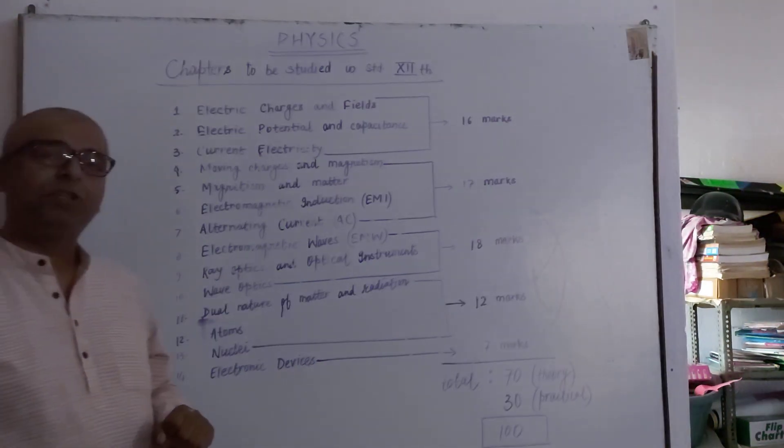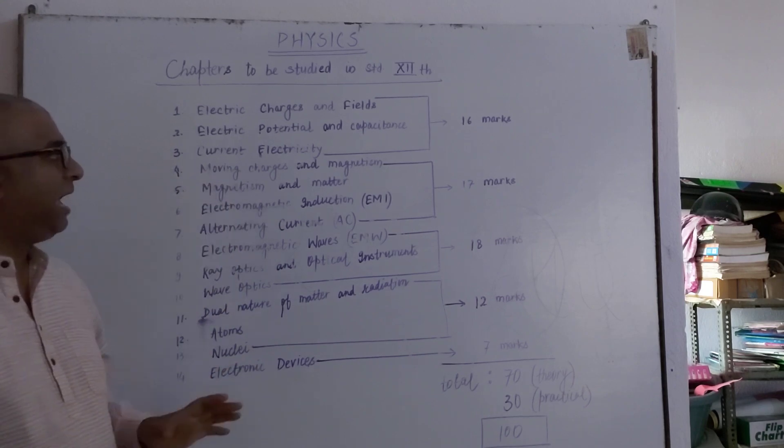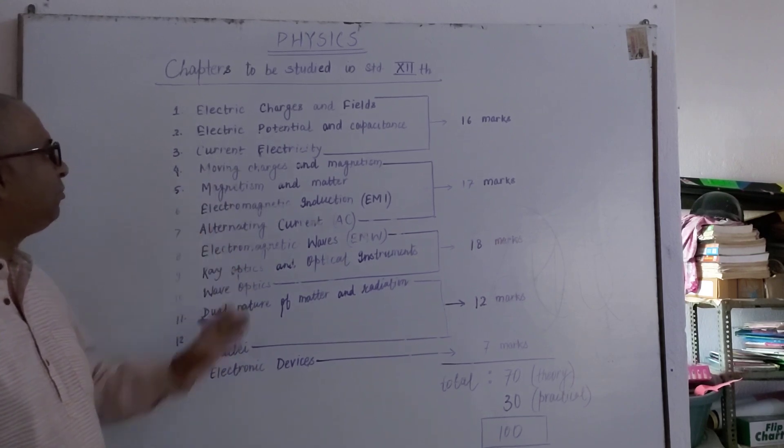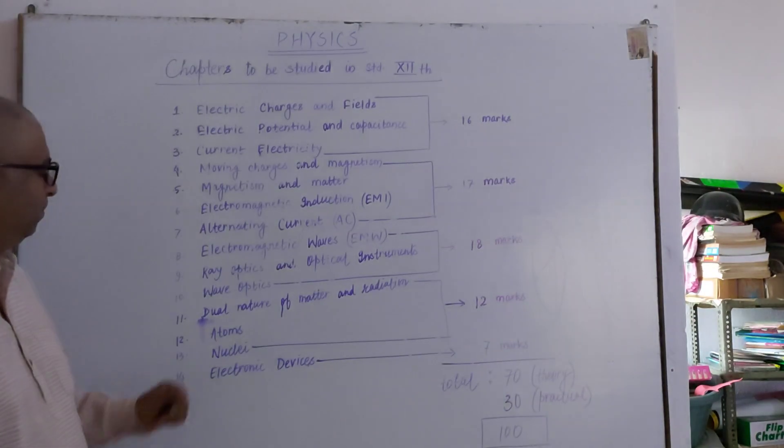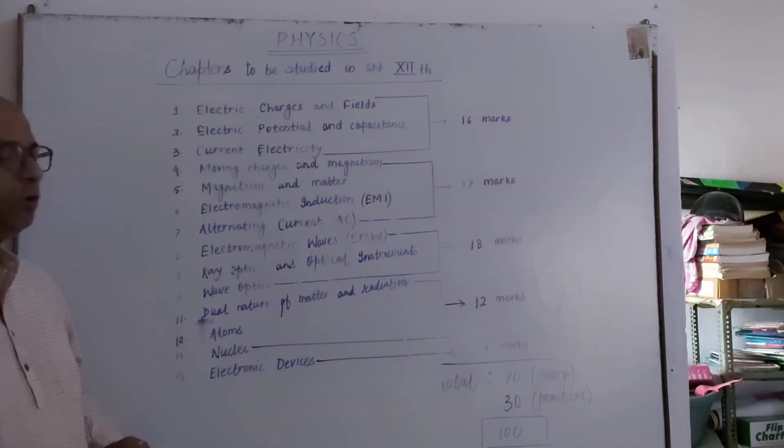Fourth chapter is Moving Charges and Magnetism. Fifth chapter is Magnetism in Matter. Sixth is Electromagnetic Induction. Seventh is Alternating Current, AC in short. Eighth chapter is Electromagnetic Waves.